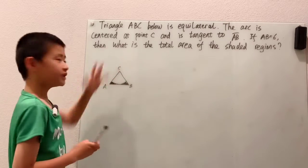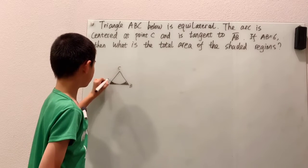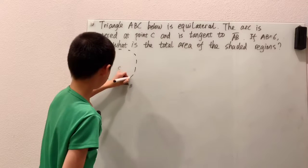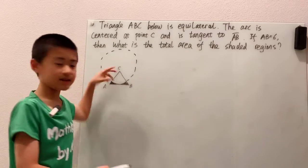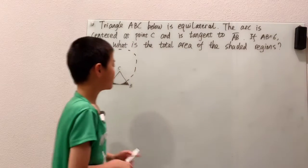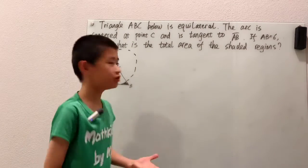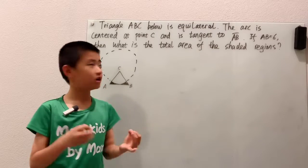Now, that centered at point C part basically means that if you finish this arc into a full circle, then point C is the center of that circle. And tangent, sometimes called tangent C, means that two shapes or two lines only touch at one point.